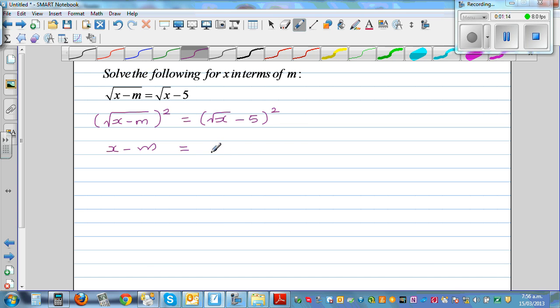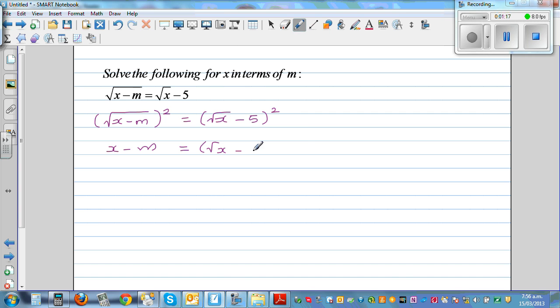This is square root of x minus 5 times square root of x minus 5. So this equals x minus m.